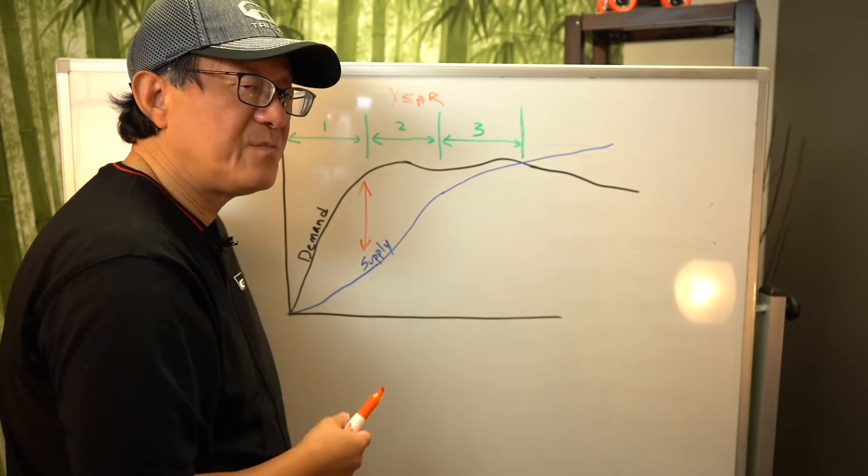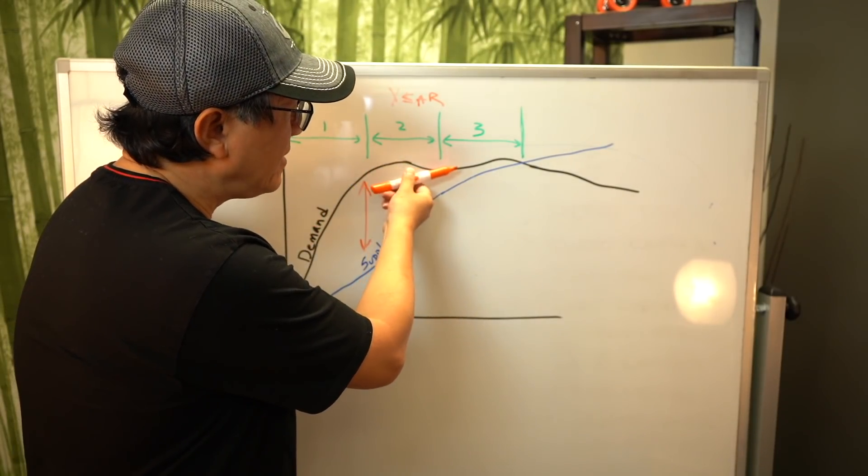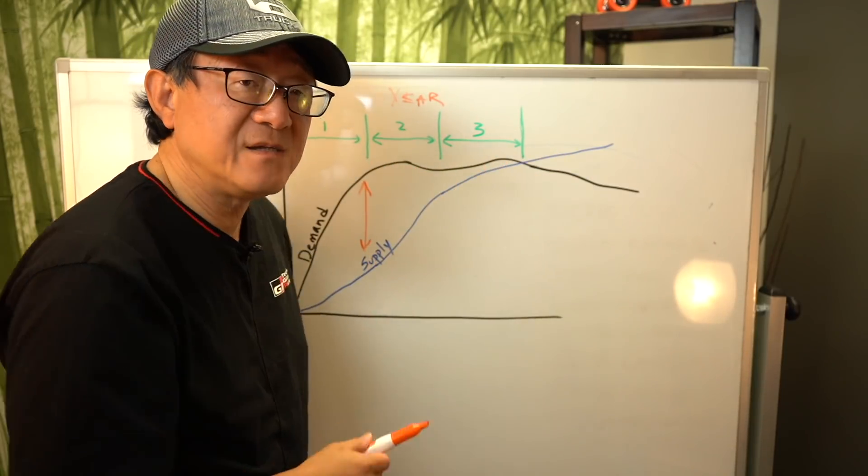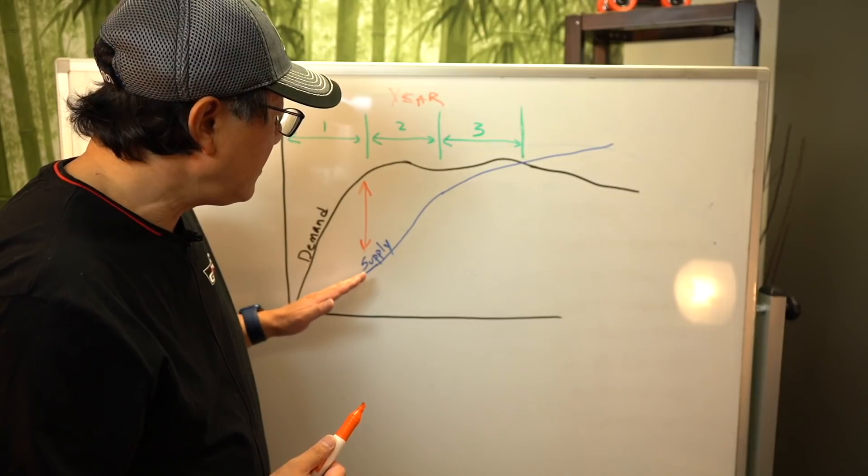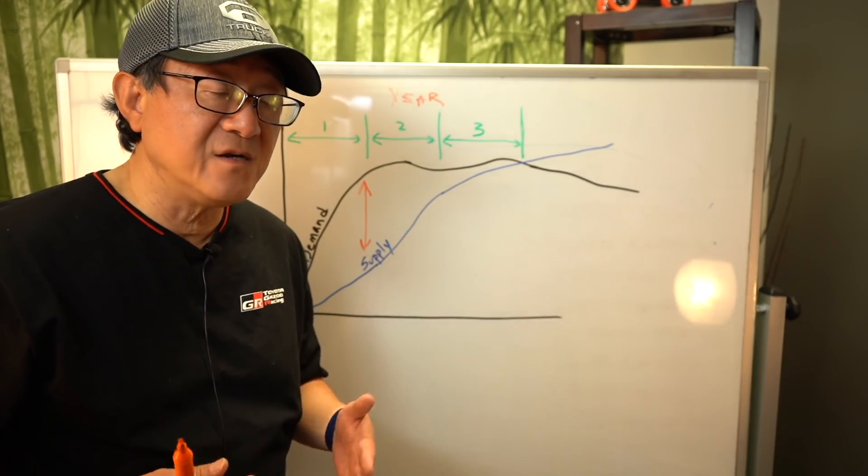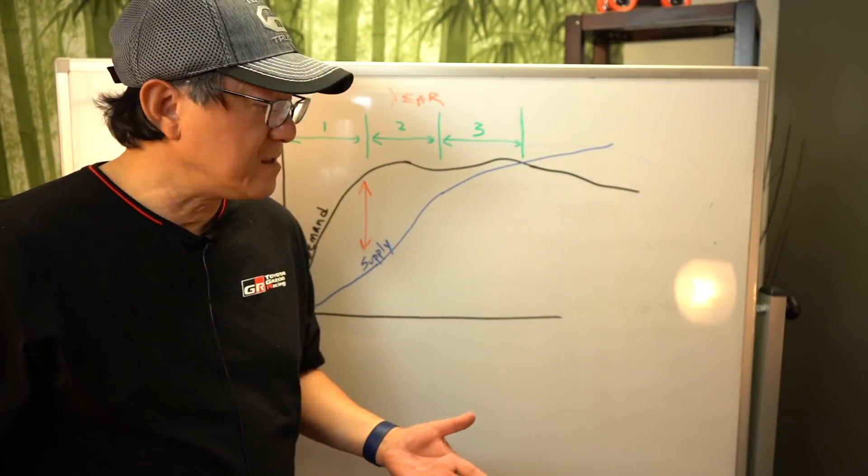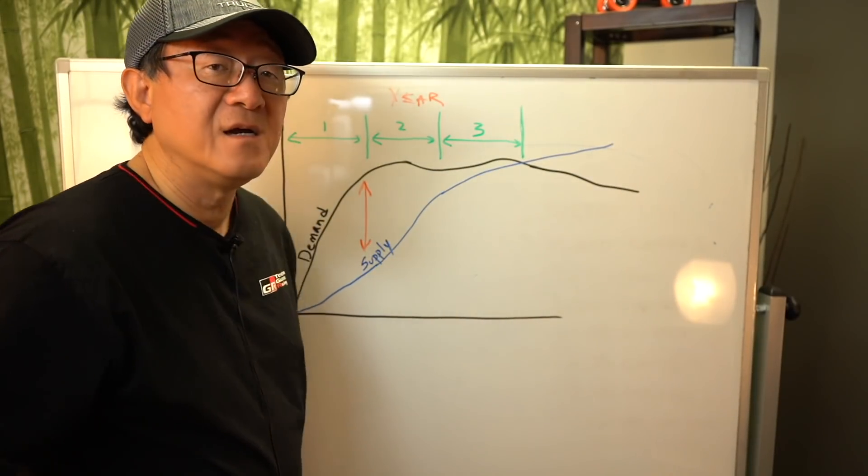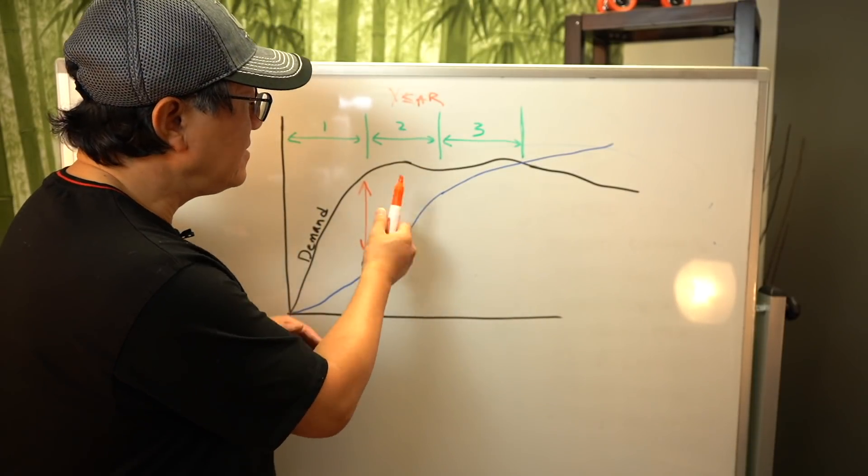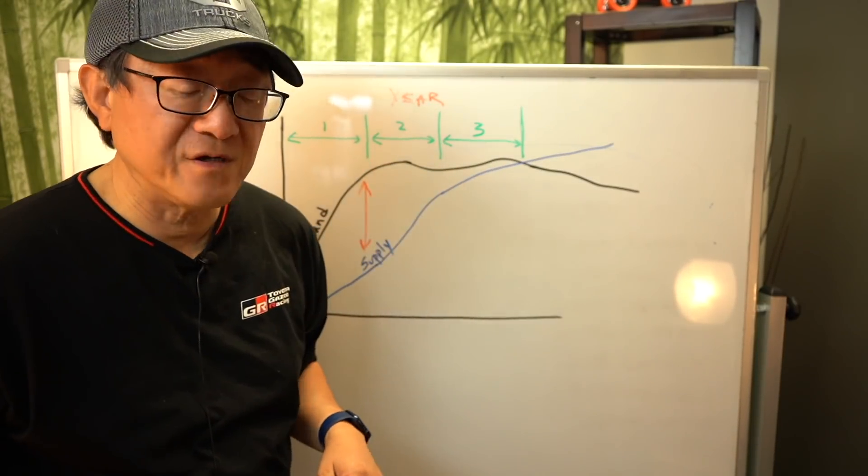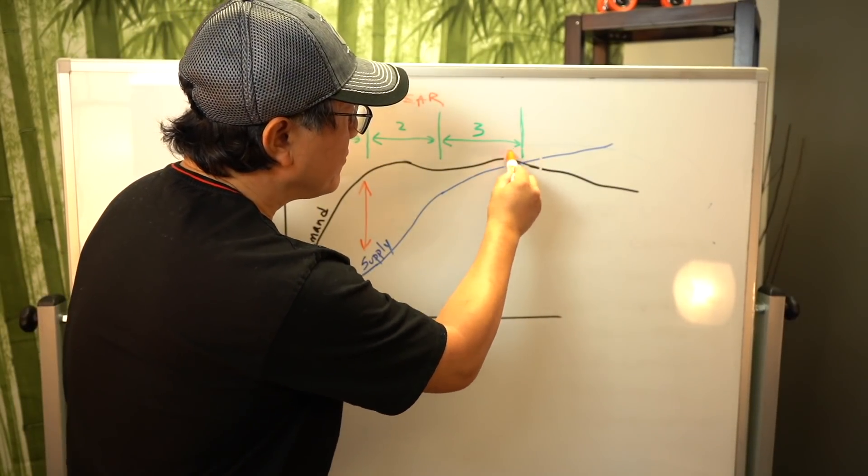But in the second year, things begin to stabilize a little bit. The demand curve will begin to stabilize, and it will begin to fluctuate up and down a little bit based on things like incentives. But the supply curve will also go up because the manufacturers have increased and ramped up the production, and they have gotten all the bugs out of the system, and they're able to increase the supply month after month, year after year. And supply and demand curve is beginning to converge. Maybe the second year or third year, typically speaking, supply and demand curve will converge.